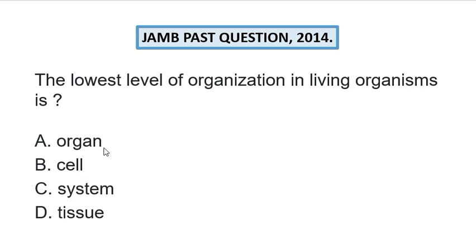Examples of cells at the lowest level of organization include the epithelial cell. We also have bone cells, which are also known as osteocytes. We have melanocytes, which produce melanin for the skin. Those are examples at the lowest level of organization.